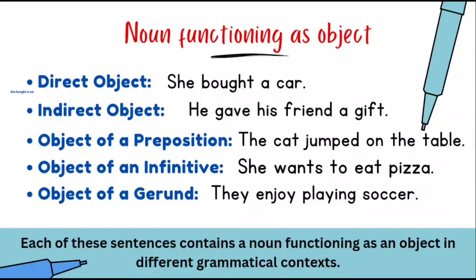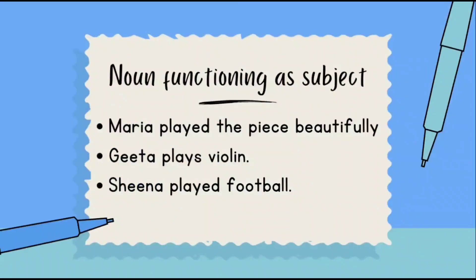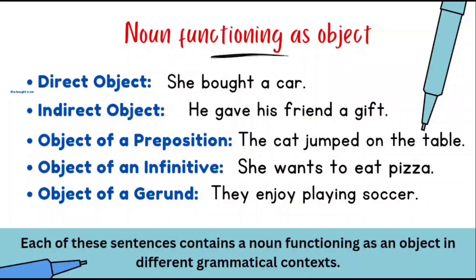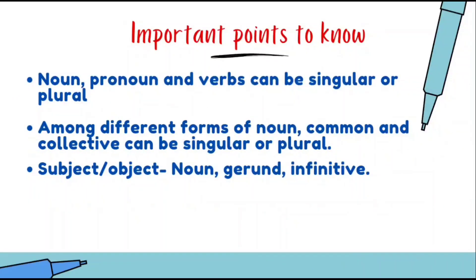Object of a gerund: 'They enjoy playing soccer.' 'They' is the pronoun, 'enjoy' is the verb, and 'playing' is the gerund. After the gerund there is a noun — 'soccer' — so soccer is the object of the gerund. So nouns work as subjects, and also as objects: direct object, indirect object, object of a preposition, object of an infinitive, and object of a gerund.